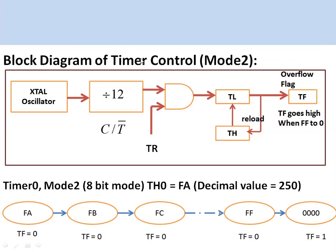Mode 2 is an 8-bit auto-reload mode. The crystal frequency divided by 12 is fed to the timer. The value to be loaded is placed in the TH register. When the timer starts, the TH value is automatically copied into the TL register and starts incrementing. When it overflows from 0xFF to 0x00, the overflow flag is set.